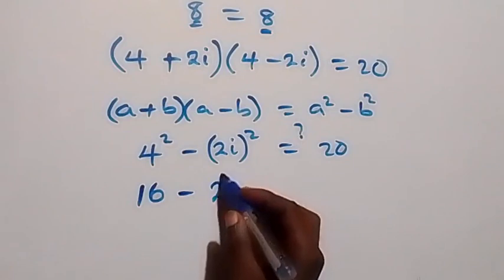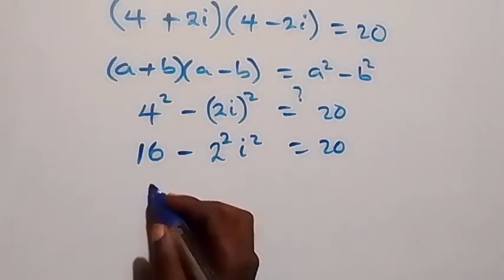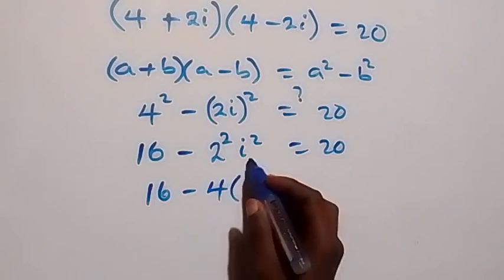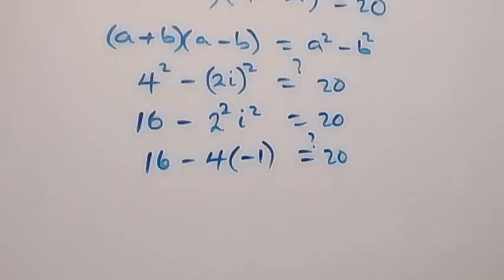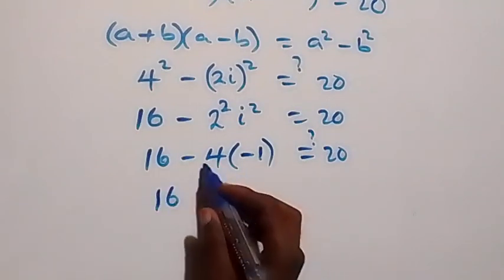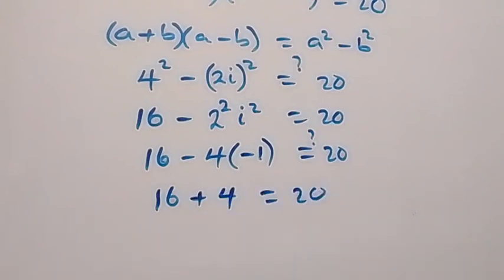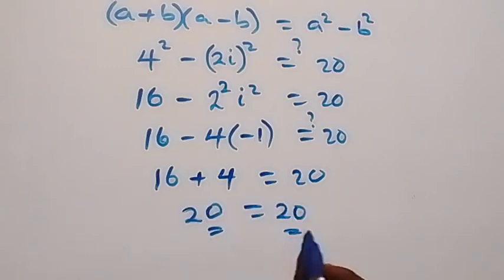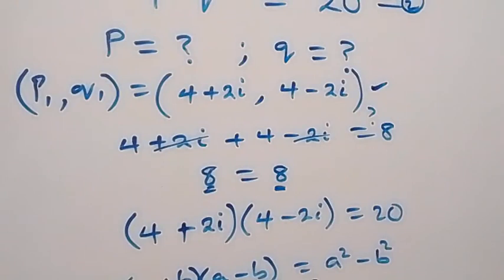We have 4 squared minus 2 squared times i squared equals 20. Now 4 squared is 16, 2 squared is 4, and i squared equals negative 1. So we get 16 minus 4 times (negative 1) equals 20, which becomes 16 plus 4 equals 20. That gives us 20 equals 20, so the left-hand side equals the right-hand side, confirming our solution set satisfies the given problem. This is also true for the second solution set.